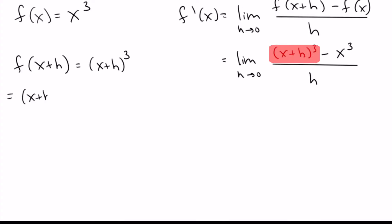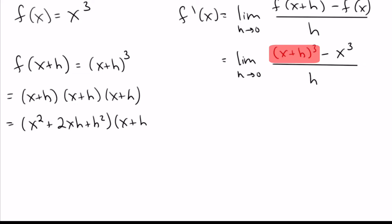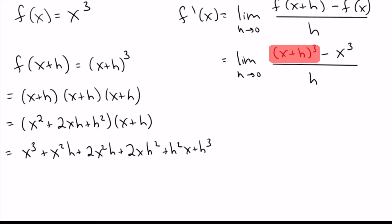That means x plus h multiplied by itself three times. If you take the first two and foil them out, you get x squared plus 2xh plus h squared. And then we've still got one more (x plus h) at the end. If we multiply that through, we get x cubed plus x squared h plus 2xh squared plus h squared x plus h cubed.